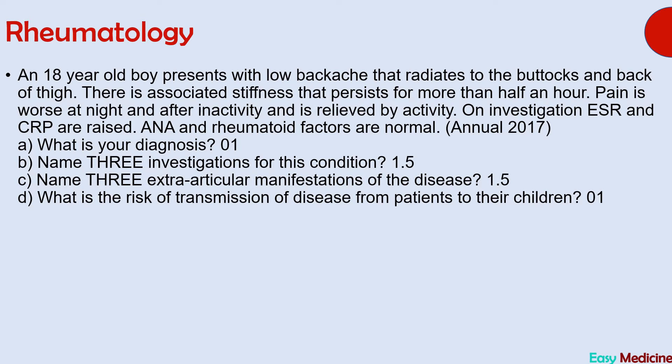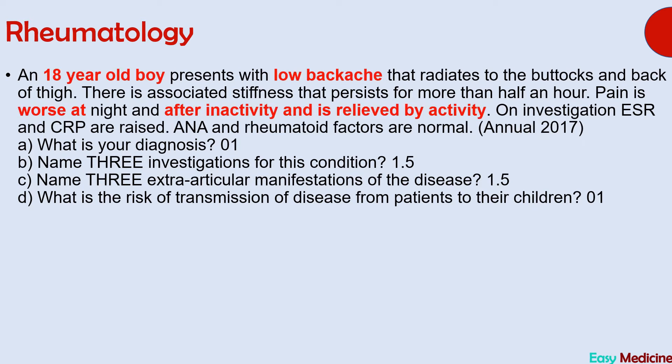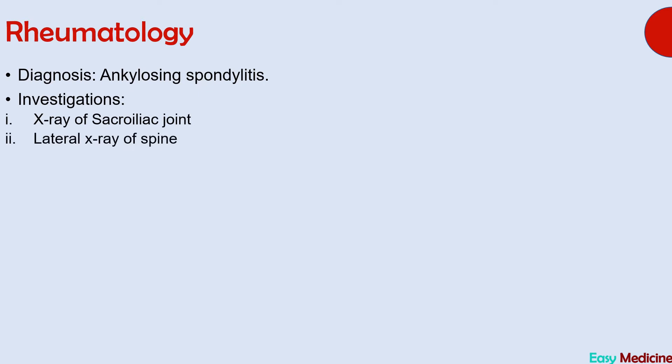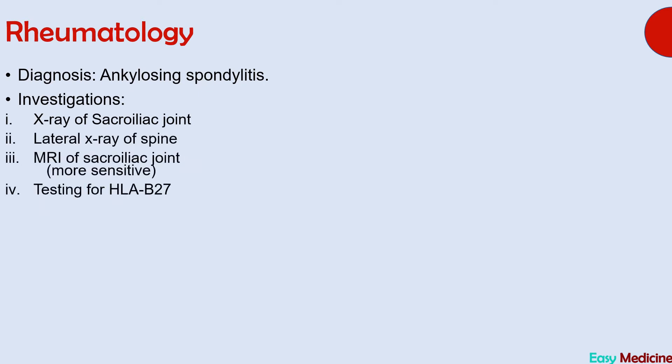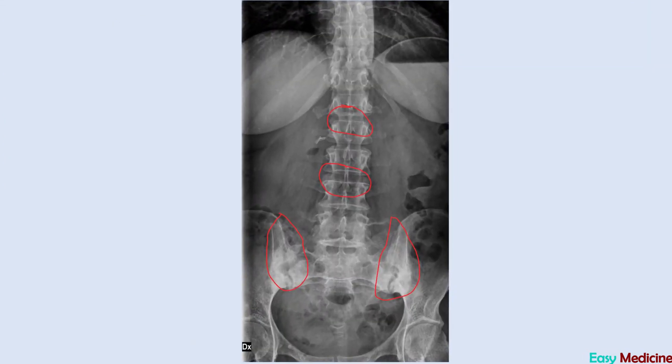The important points leading to the diagnosis of ankylosing spondylitis are: an 18-year-old boy with low back pain worse after inactivity and relieved by activity. Investigations include X-ray of the sacroiliac joint, lateral X-ray of the spine, MRI of the sacroiliac joint (more sensitive), and HLA-B27 testing. On X-ray, there is fusion of sacroiliac joints and fusion of vertebral bodies, giving the spine a 'bamboo spine' appearance.